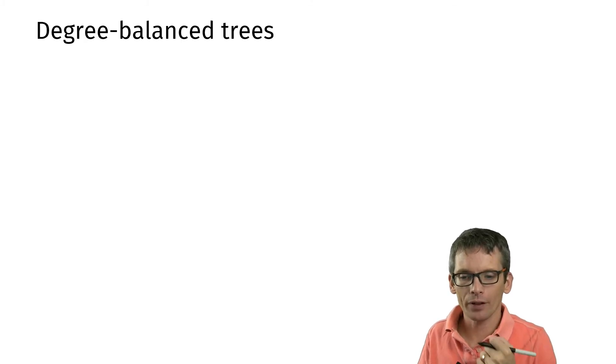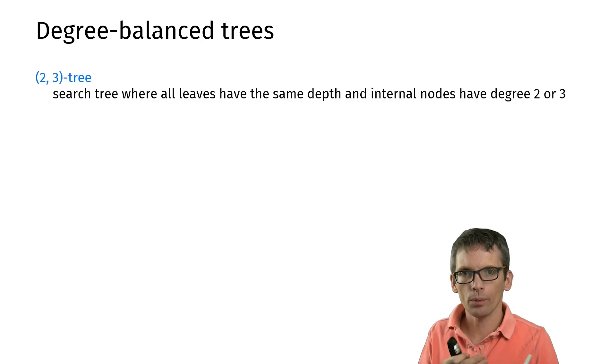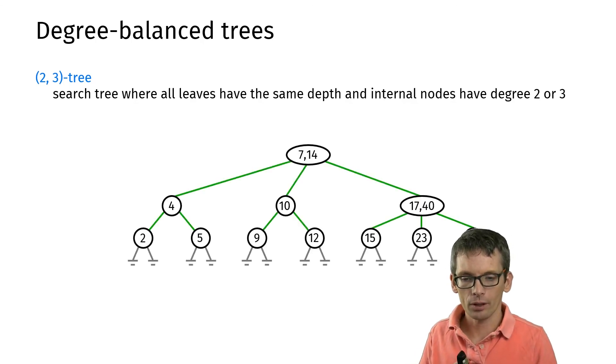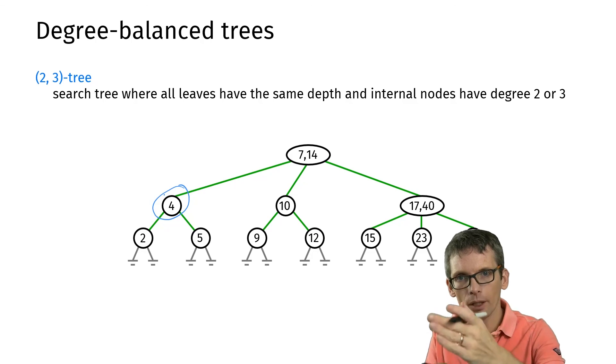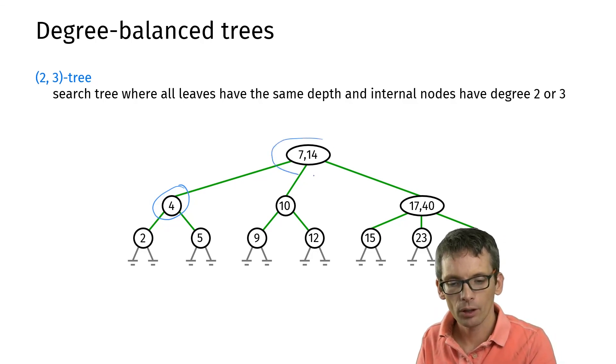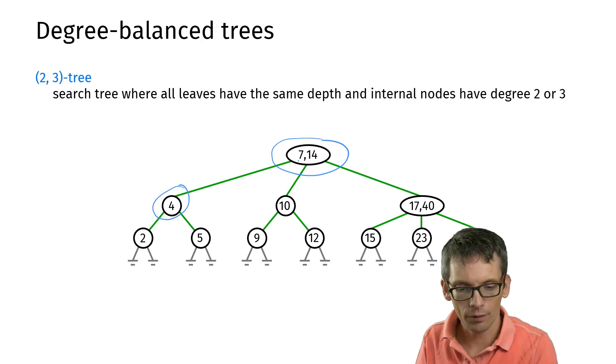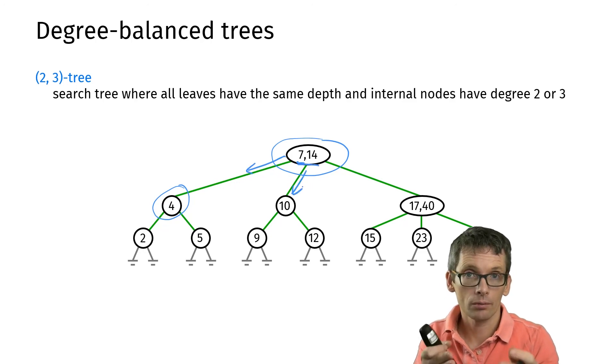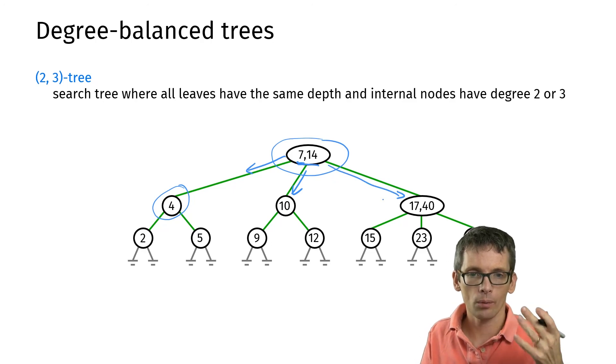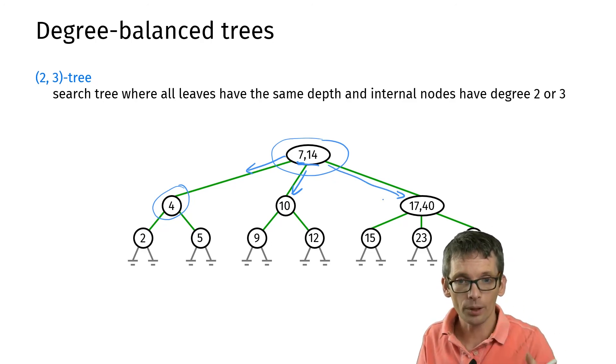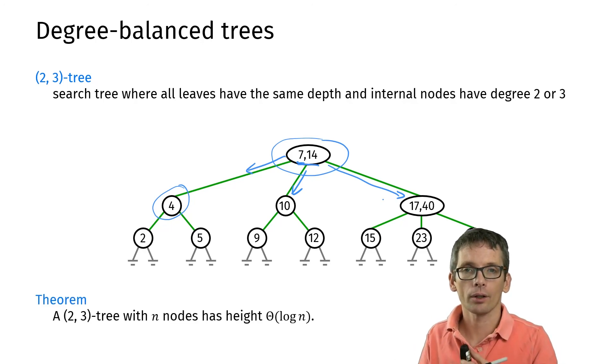Now finally let's have a look at an example of a degree balanced tree. So a (2,3)-tree is an example of a degree balanced tree. So here we have a search tree where all leaves have the same depth and all internal nodes have degree 2 or 3. So how would this look like? So this here is an example. So I have nodes which simply have degree 2 and there I just have one key at that node, but I also have nodes with degree 3 and there I have two keys and then I can search by, here for instance if I'm smaller than 7 I go to the left. If I'm between 7 and 14 I go to the middle and if I'm larger than 14 I go to the right. Again if we can get a tree with these properties it will have height log n.